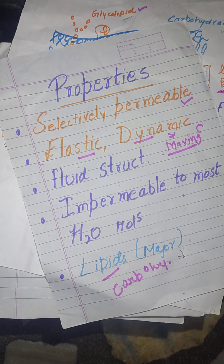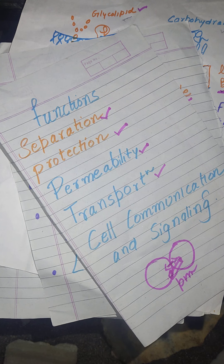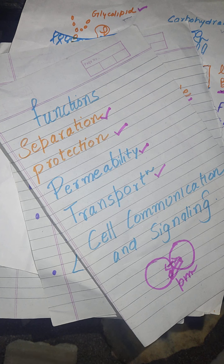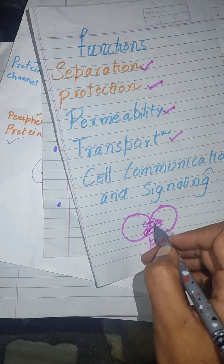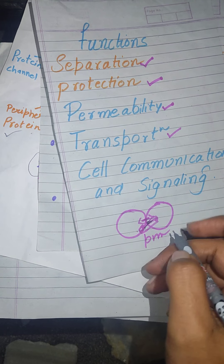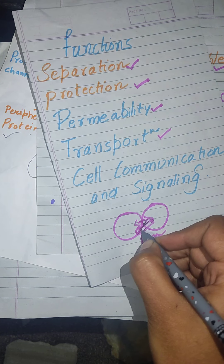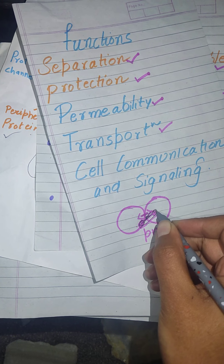If we talk about the function of the plasma membrane, the main function is separation — it separates the internal environment of the cell from the surrounding and also acts as a protective layer. It is selectively permeable and helps in the transportation of important molecules. As a part of transportation, it also helps in communication — cell to cell communication and cell signaling. As a part of cell signaling, it helps in cellular adhesion. When two cells adhere with each other for communication, the plasma membrane is involved in this process. It also helps in the formation of cellular junctions, which are formed during cell to cell communication with the help of the plasma membrane.